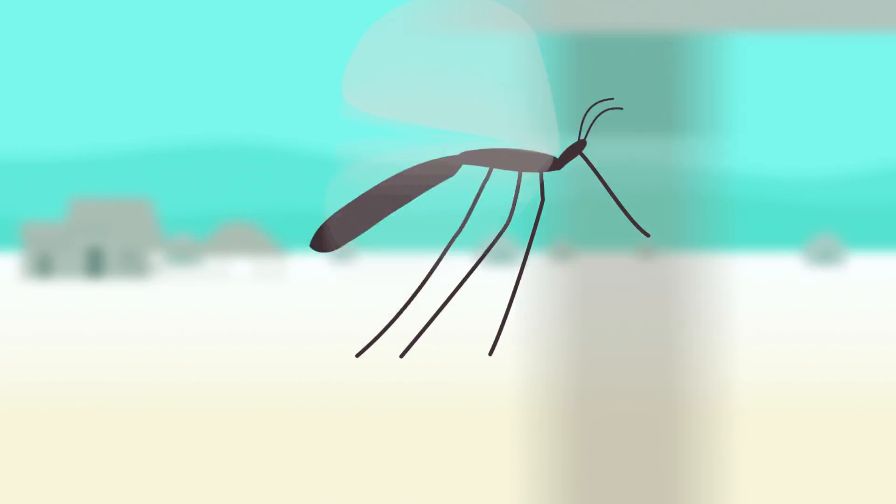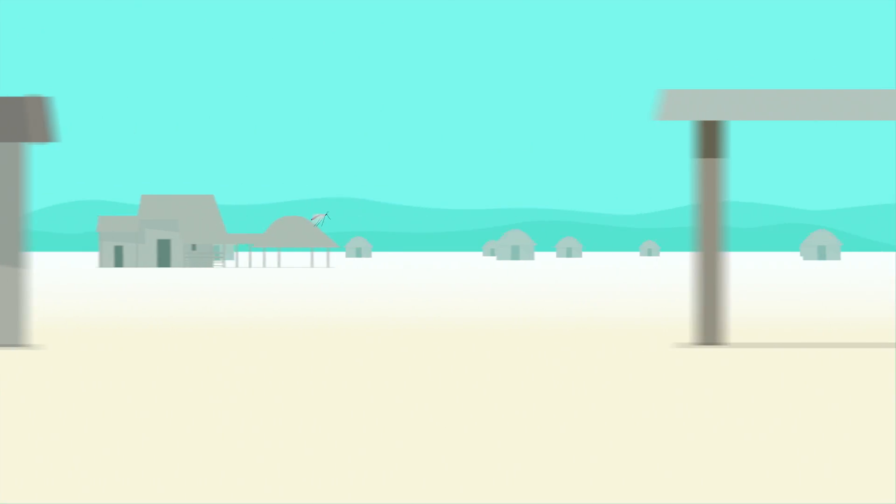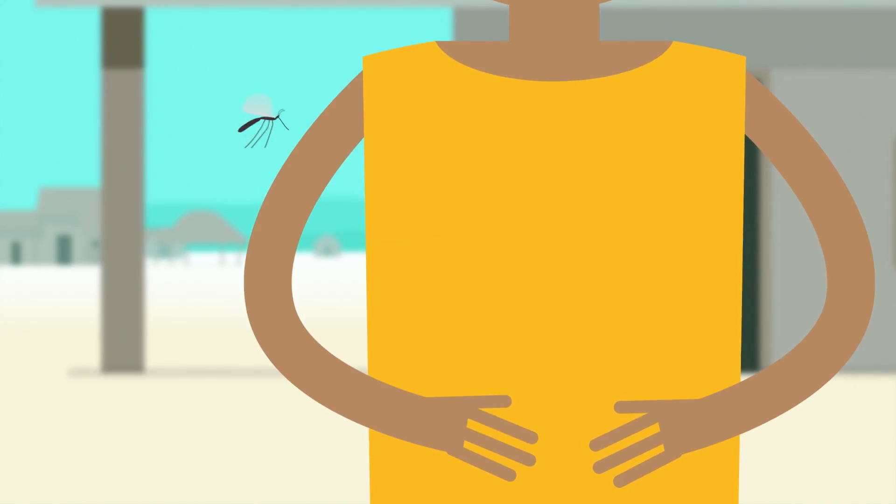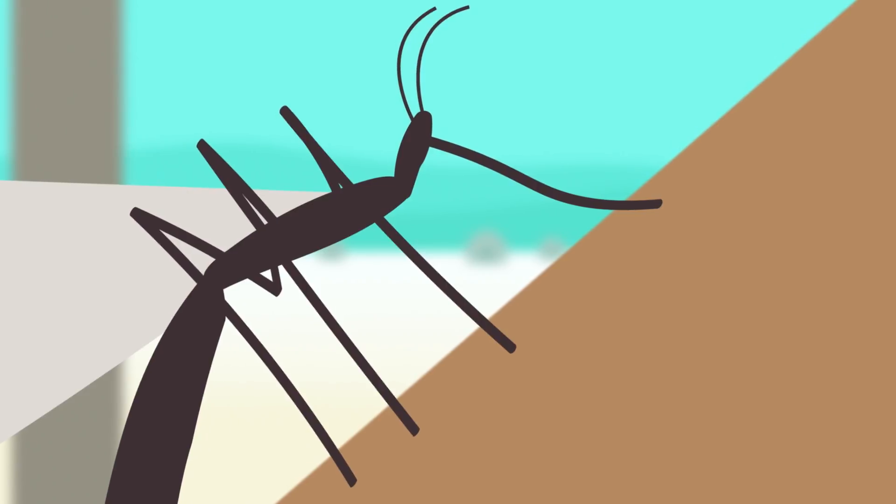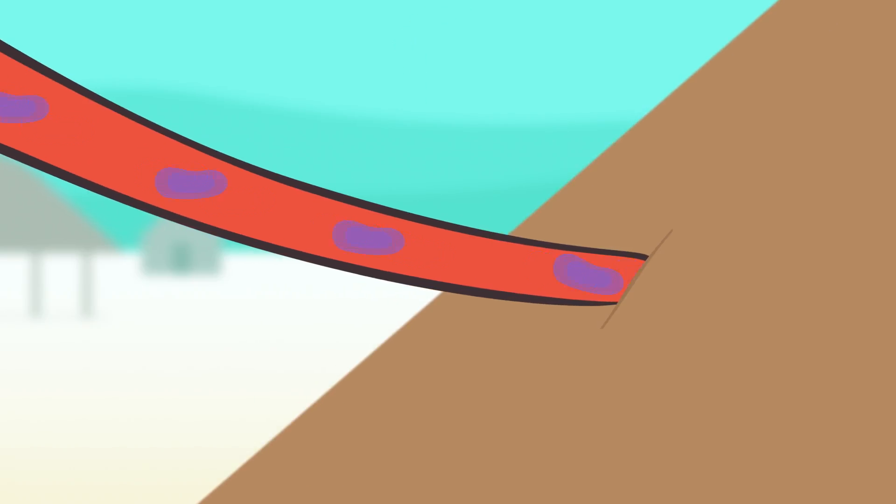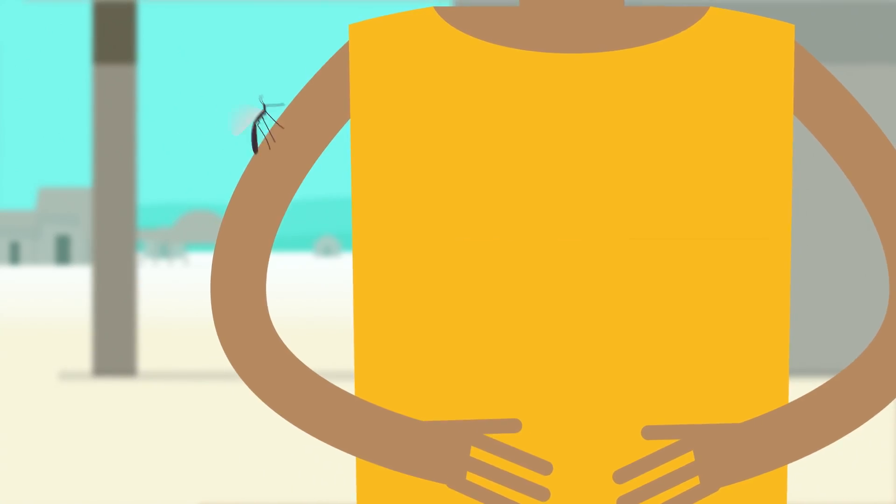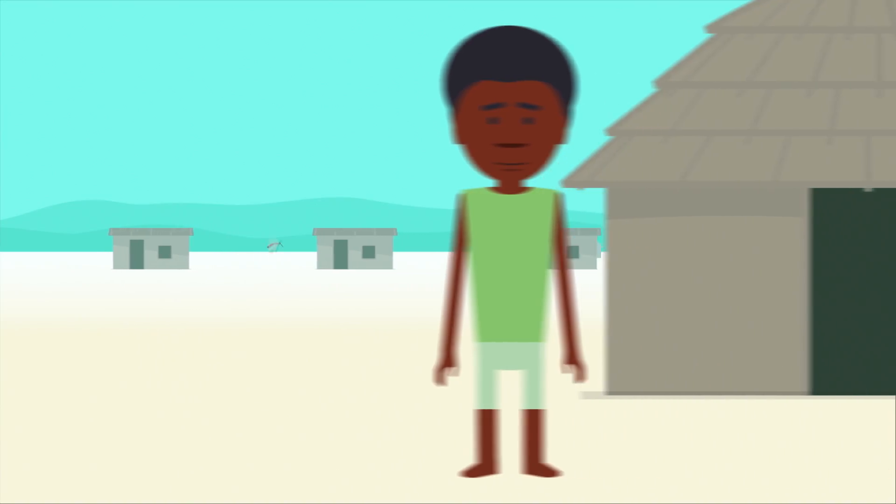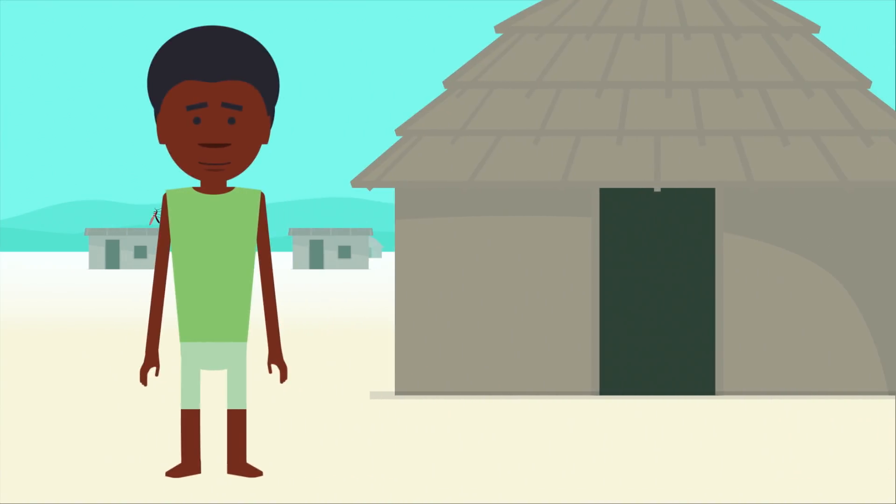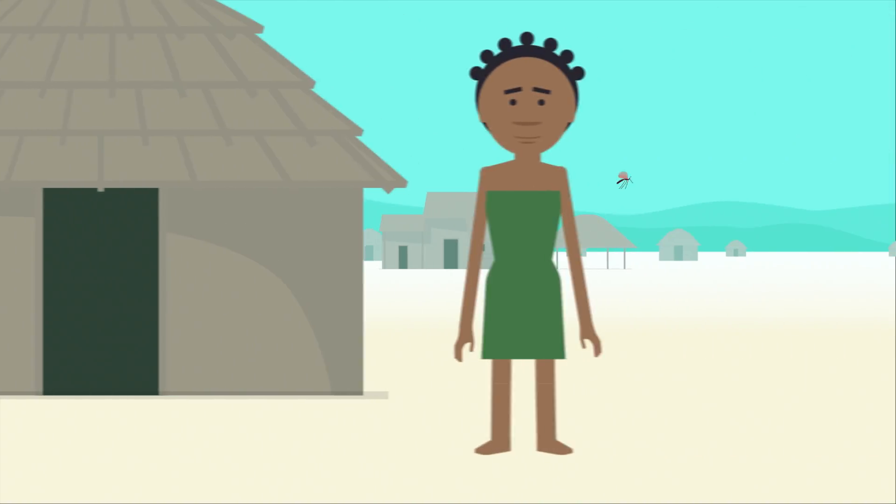The malaria parasite depends on mosquitoes to carry it from person to person. A mosquito bites a person who has malaria. Now the mosquito carries the parasite. And once the parasite matures, it can be passed along to the next person the mosquito bites. Every time it bites, malaria spreads.